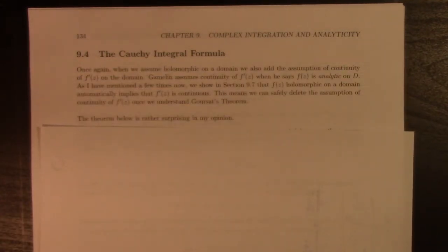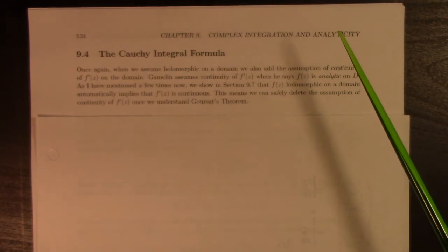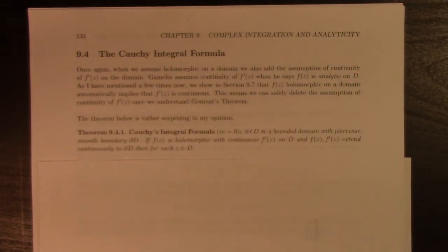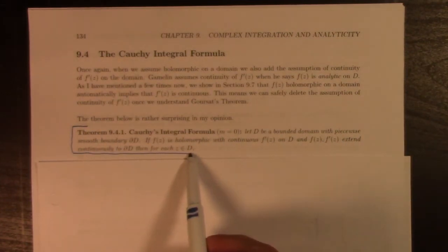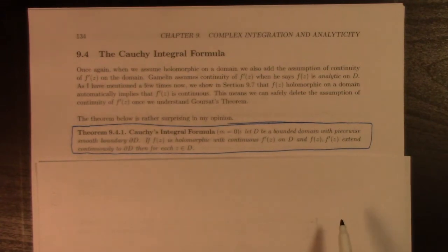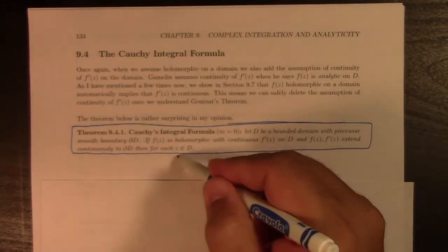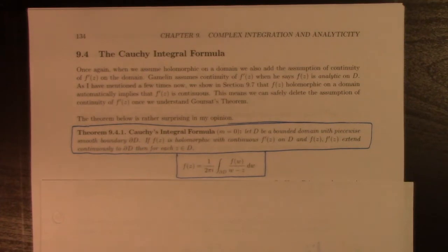So the Cauchy Integral Formula starts with the assumption that we've got a function which is complex differentiable on some open connected set. Let D be a bounded domain with piecewise smooth boundary. If F is holomorphic and continuous with continuous F prime of Z on D, and F and its derivative F prime of Z extend to the boundary of D, then for each Z in D we have, here's the punchline, that F of Z is equal to 1 over 2 pi I times the integral of F of W over W minus Z, DW.